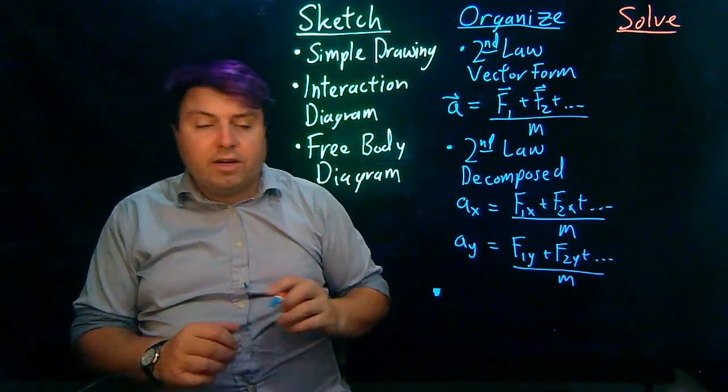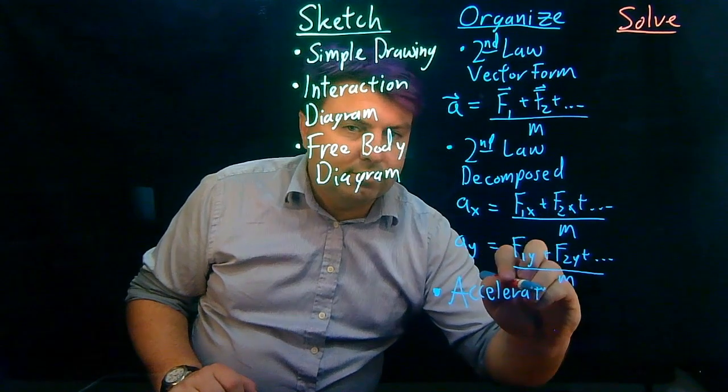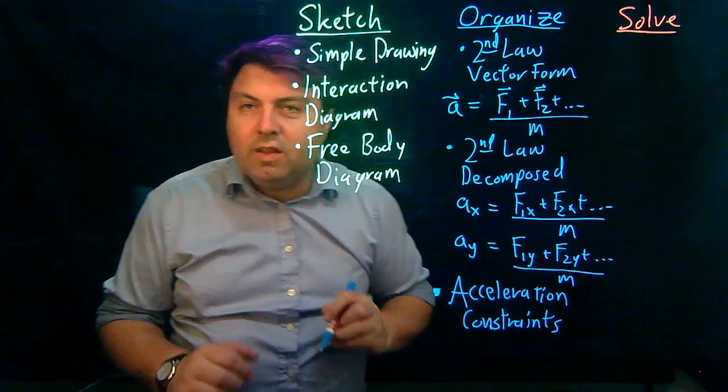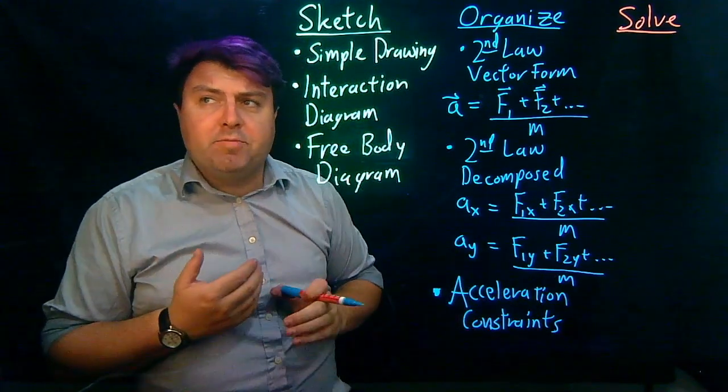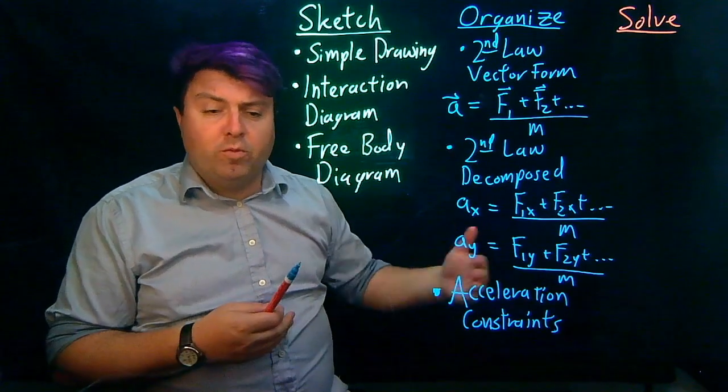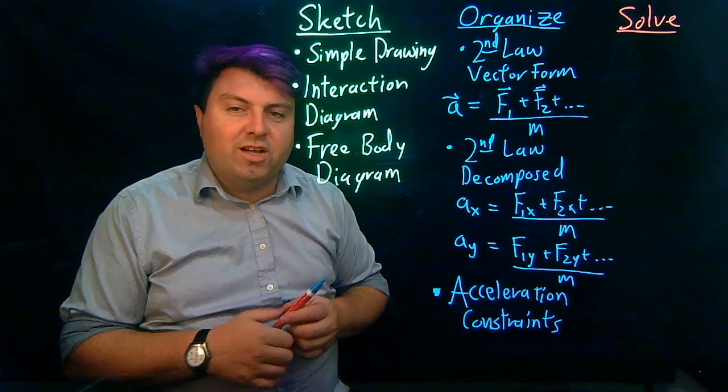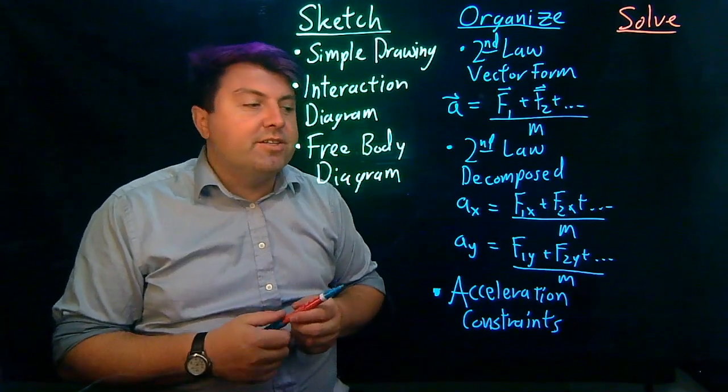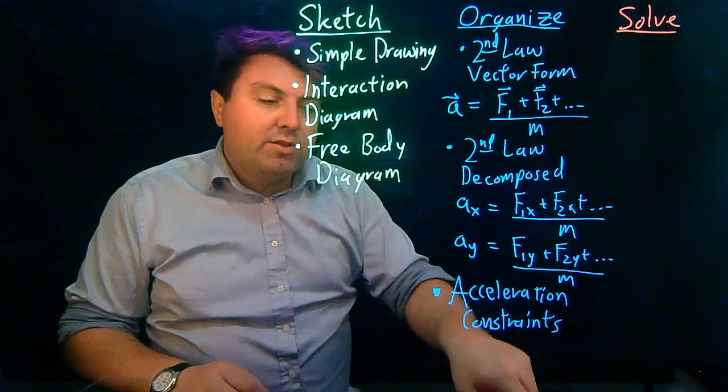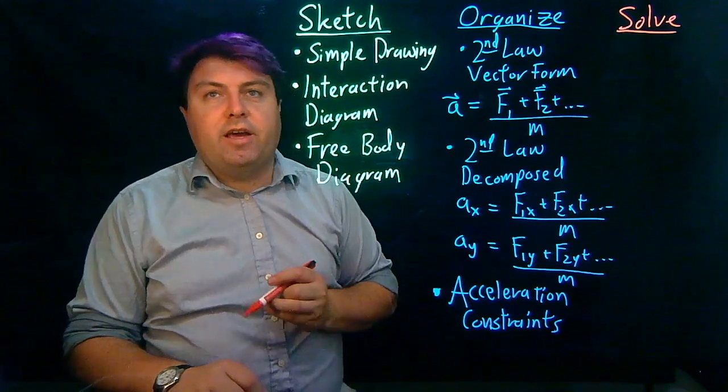And then our last step in our organized step is to look at our acceleration constraints. So for this week, it'll oftentimes be told that one or both accelerations are zero. If we have a normal force, then the acceleration perpendicular to the surface is zero. If we have something moving at constant velocity, then all of its acceleration is zero. Or we might be told this acceleration is part of the problem. So that's what we mean with acceleration constraints. And then we can just plug them in nicely here into AX and AY.